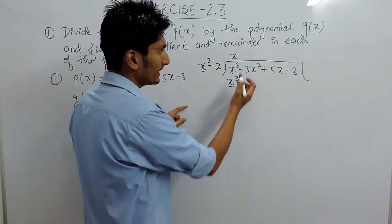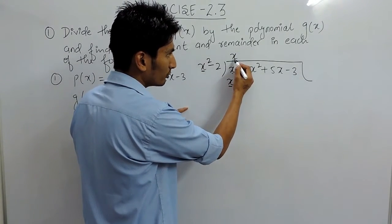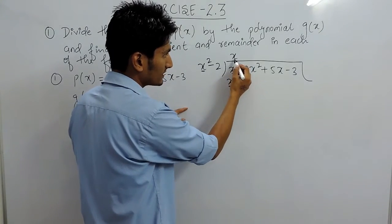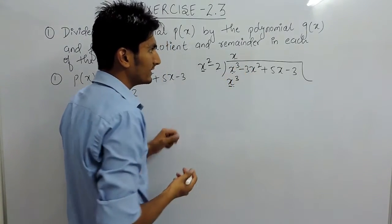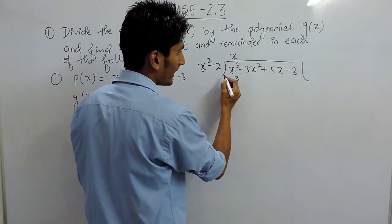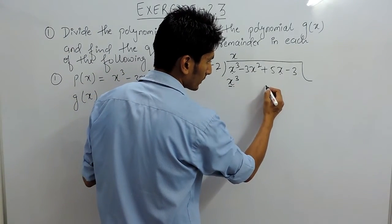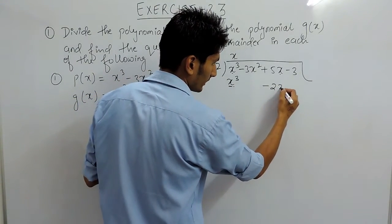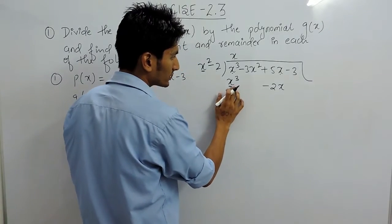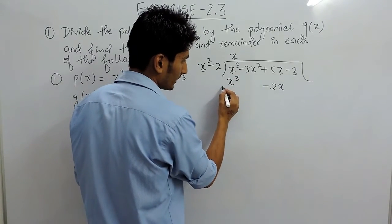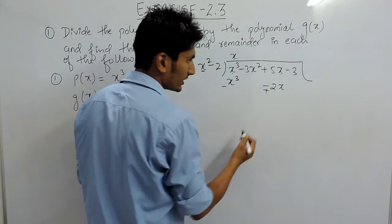Similarly, you have to multiply x with this also, so x times minus 2 is minus 2x. x should be written below x. Now you have to subtract these, so for subtracting you have to change the signs.